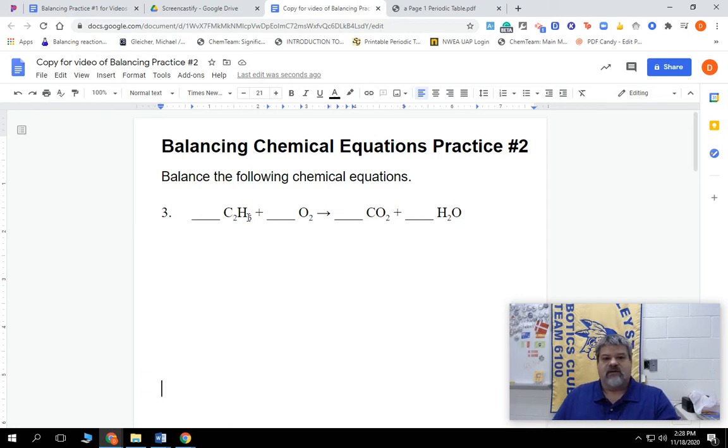Welcome to Balancing Chemical Equations, practice number two, question number three. So here's our skeleton equation. We have C₂H₆ plus O₂ yields CO₂ plus H₂O, and we're going to go ahead and balance that.